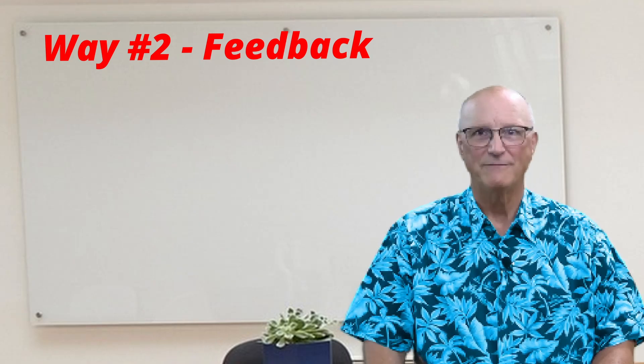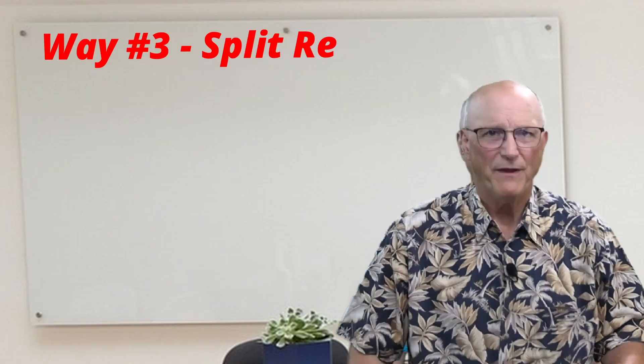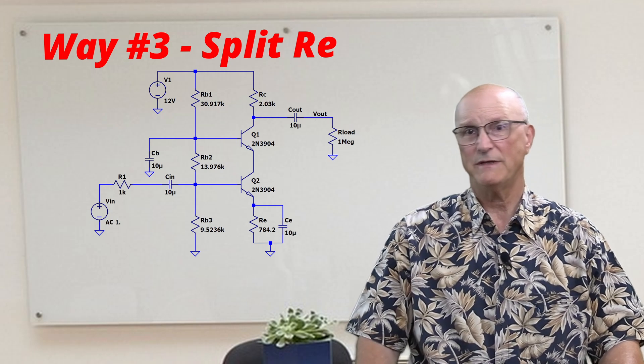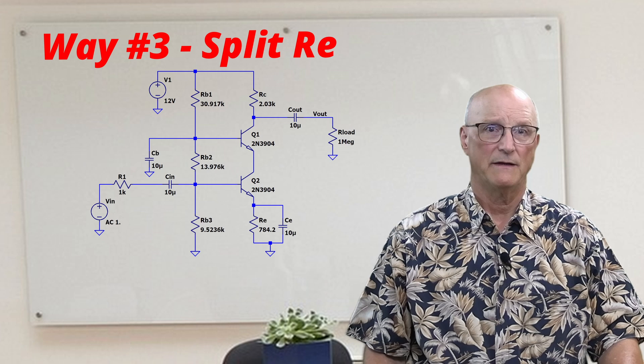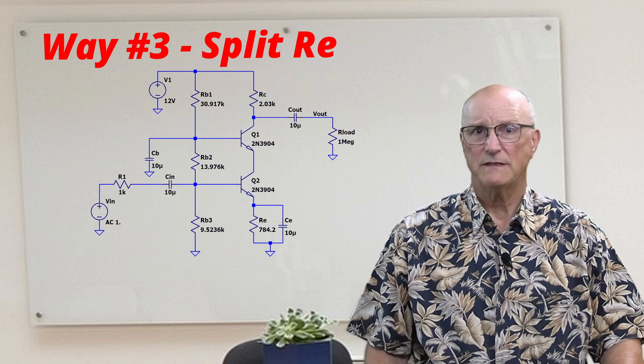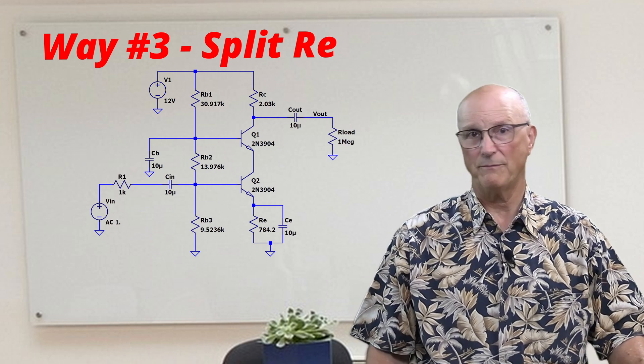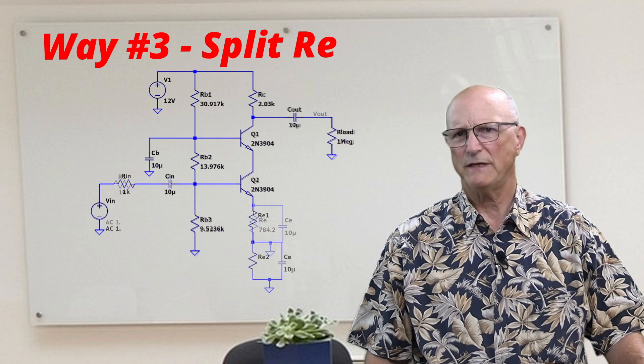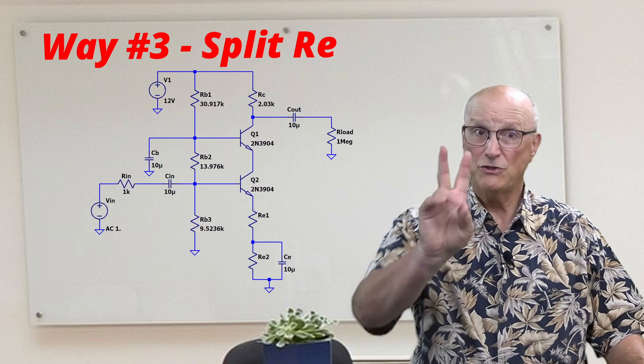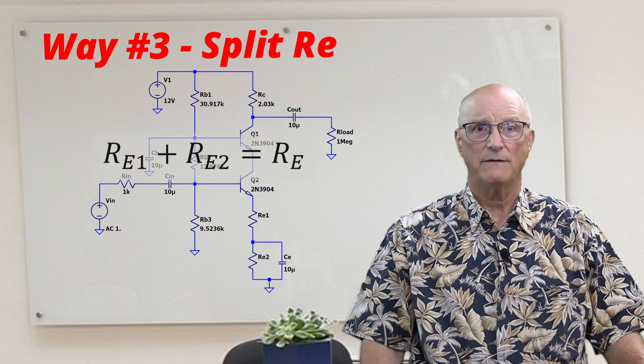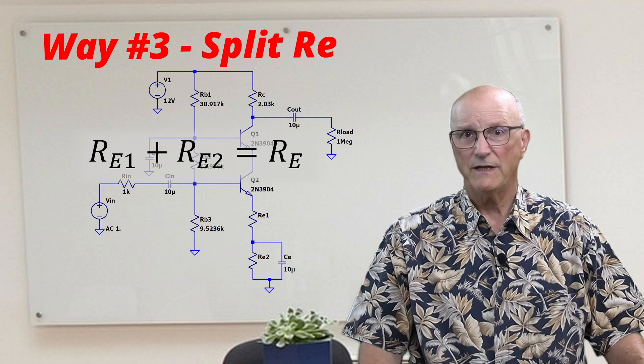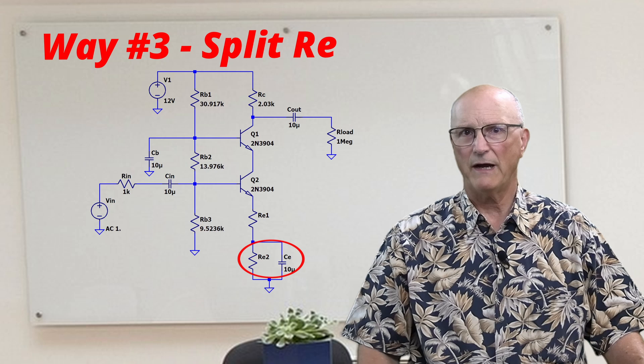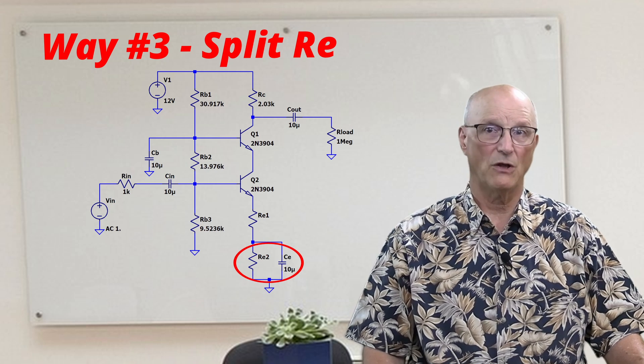As with method two, the third method begins by completing the design as we did in the last video. As you can see here, this is the same circuit that we developed. I'm going to make a small change. I'm going to split the emitter resistor into two pieces. The sum of these two pieces will equal the same value as the original emitter resistor. I will put the bypass capacitor across the lower of the two.